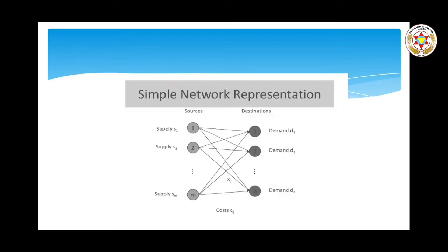This is an example of a transportation problem shown as a simple network representation. Assume a manufacturer has three factories — F1, F2, F3 — producing the same product. The product is transported to three warehouses: W1, W2, and W3. Each factory has a limited supply capacity and each warehouse has a specific demand. The problem is to determine the quantity each factory should transport to each warehouse in order to minimize total transportation cost.